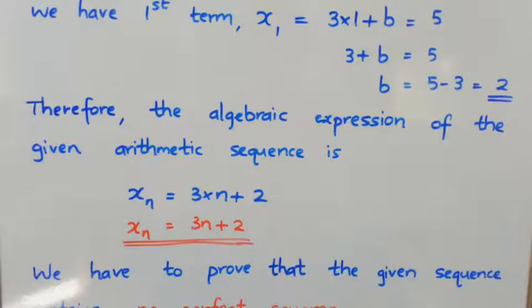Now substitute the values of a and b into the algebraic expression. So xn = 3n + 2. That is the algebraic expression of the given sequence.